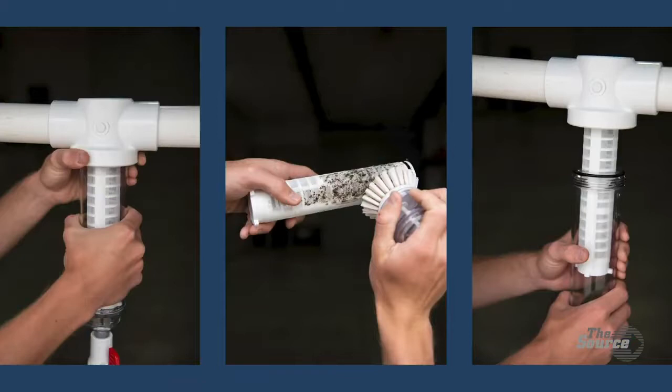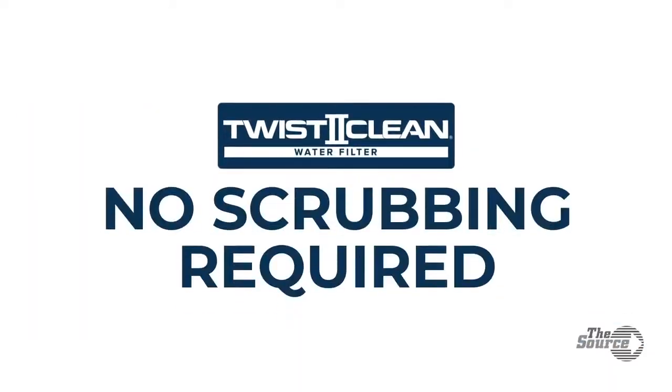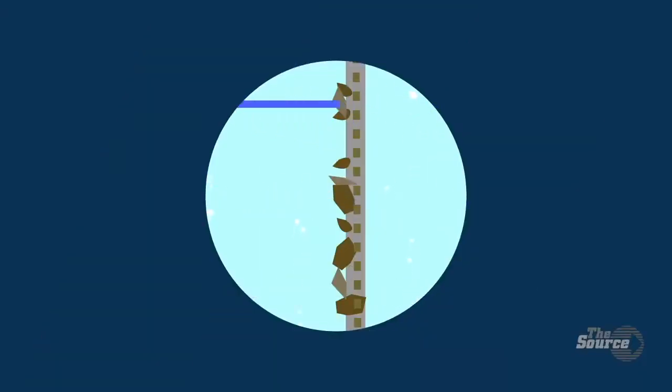With Twist to Clean, no scrubbing required. The Twist to Clean patented technology does a complete cleaning of the screen every time it's flushed. A quarter turn of the handle does two things: it reverses the flow of water